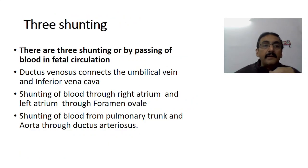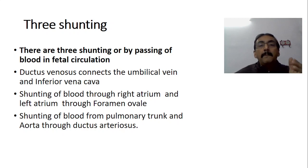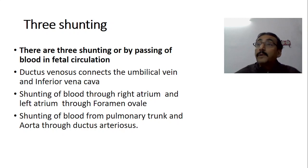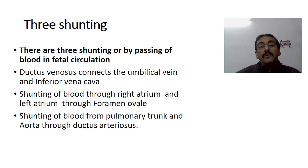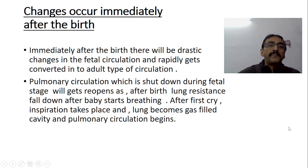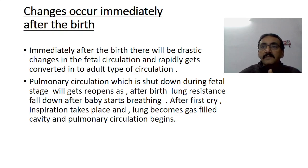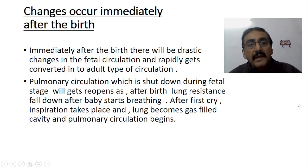There are three important shuntings or bypasses in the fetal circulation. Number one: ductus venosus connects the umbilical vein and inferior vena cava. Number two: shunting of blood from the right atrium to the left atrium through the foramen ovale. Number three: shunting of blood from the left pulmonary trunk to the aorta through the ductus arteriosus. In the next class, we will see what exactly happens immediately after birth — once delivery takes place, there will be drastic changes and fetal circulation has to be changed into adult type of circulation. Thank you very much.